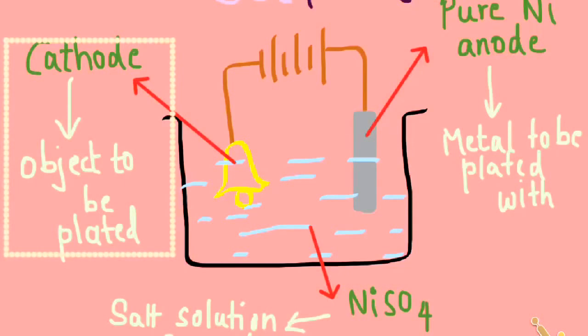Now, if I want to coat a layer of nickel on the belt, then the anode that I will take is of pure nickel. Therefore, the anode is always taken as the metal with which the cathode is to be plated with.